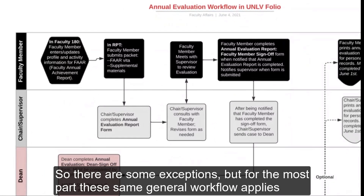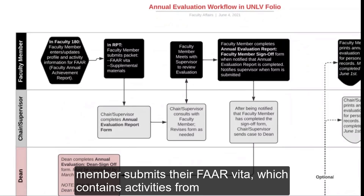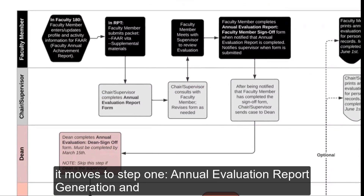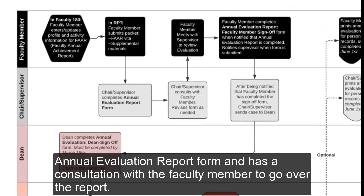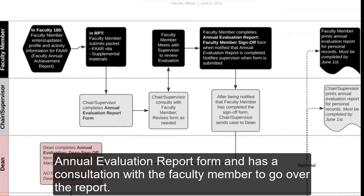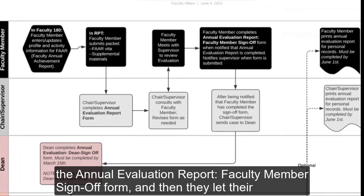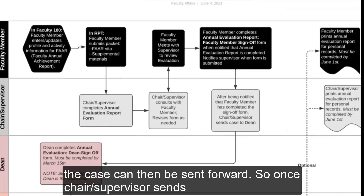There are some exceptions, but for the most part the same general workflow applies for colleges with departments. The workflow begins once the faculty member submits their FAR VITA, which contains activities from January 1st through December 31st. After the FAR is submitted, it moves to Step 1: Annual Evaluation Report Generation and Consultation. During this step, the chair or supervisor completes the annual evaluation report form and has a consultation with the faculty member. Once the report is finalized, the faculty member returns to UNLV Folio to complete the annual evaluation report faculty member sign-off form, and then lets the chair or supervisor know so the case can be sent forward.